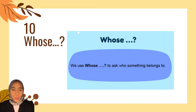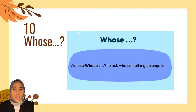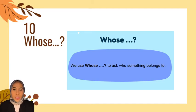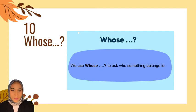Next lesson, we'll talk about 'whose'. We use 'whose' when we want to ask who something belongs to. For example: Whose bottle is this? Whose book is this? Whose motorcycle is this?